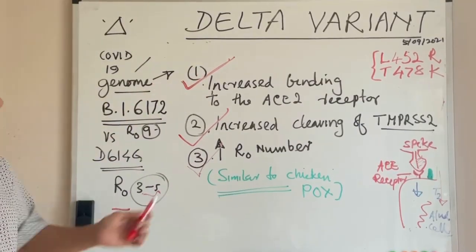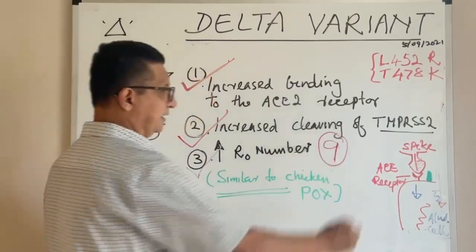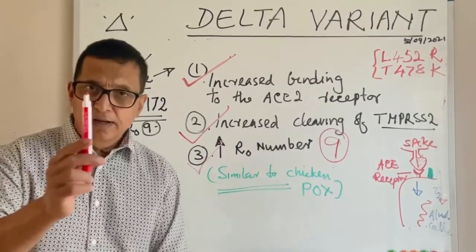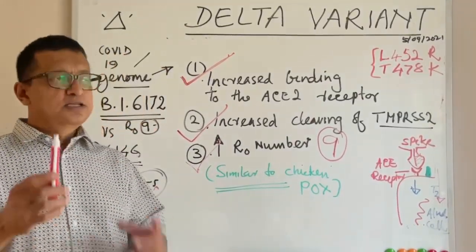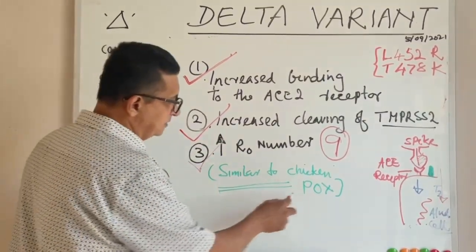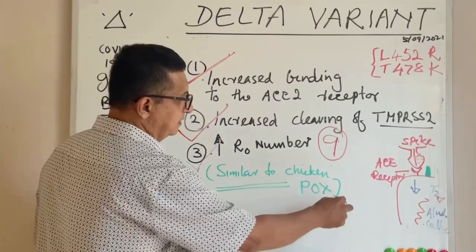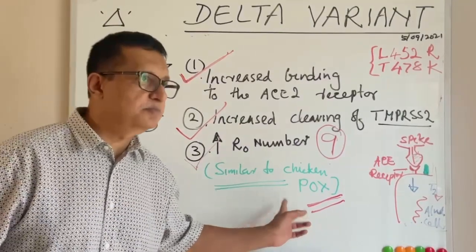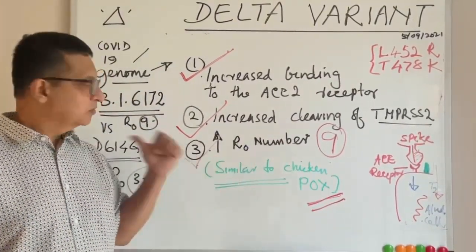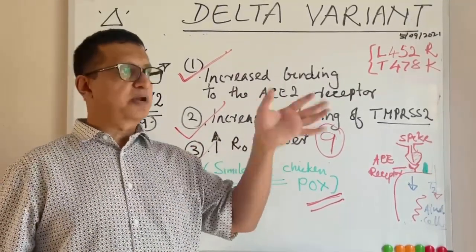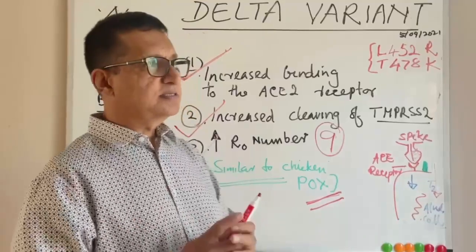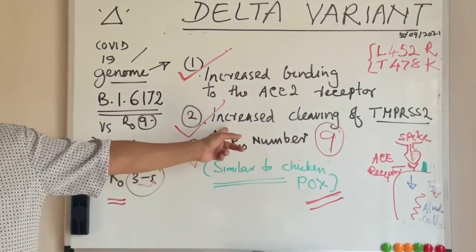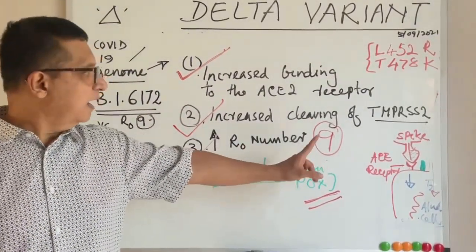In the delta variant, the R number is 9 — that is very high. If somebody gets infected with the delta variant, that person spreads it to nine persons. This is quite similar to the spread of chickenpox, which is very contagious. Those nine persons again each spread it to another nine, and so on.